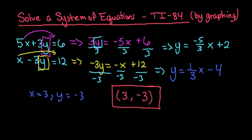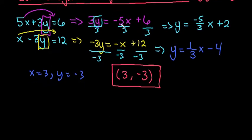And with this, it's always best to check, especially because we had to get it into y equals mx plus b, just to make sure that we didn't make any mistakes. Let's go ahead and check to make sure that this works. And so we would do 5 times 3 plus 3 times negative 3. And all I did was I simply put the 3 in for the x and the negative 3 in for the y.